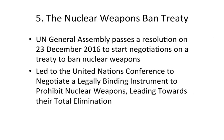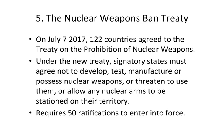Now we come to the most recent development and a source of significant hope to arms control and disarmament advocates. The UN General Assembly in 2016 — December 23rd, 2016 to be specific — passed a resolution to start negotiations on a treaty to ban nuclear weapons. This led to a United Nations conference formally titled 'A Conference to Negotiate a Legally Binding Instrument to Prohibit Nuclear Weapons Leading Towards Their Total Elimination.' On July 7th, 2017, 122 countries agreed to the Treaty on the Prohibition of Nuclear Weapons.